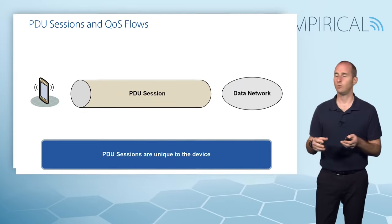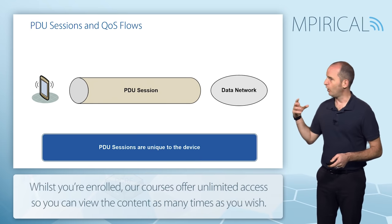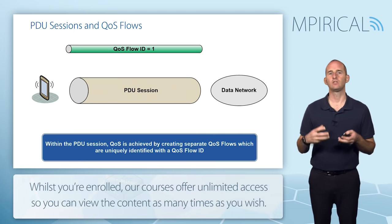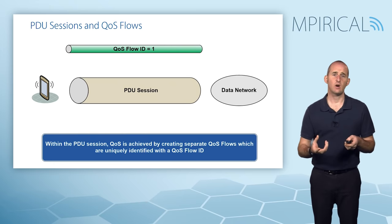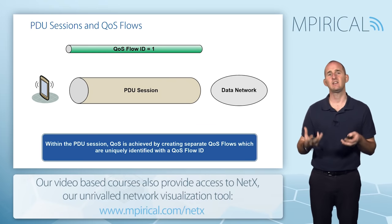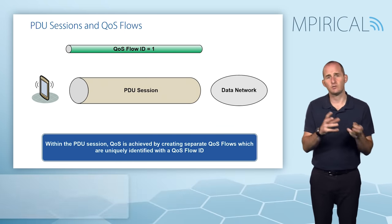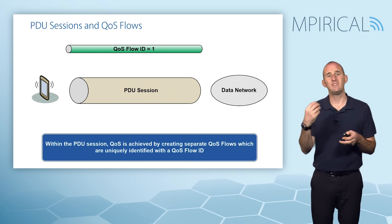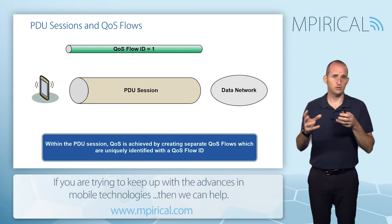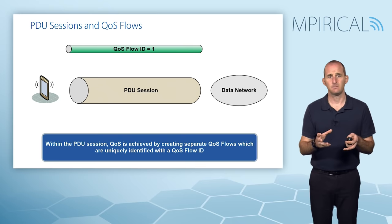No other devices in the network will be using the connectivity associated with this particular PDU session. In order to provide QoS within our PDU session, we have what are called QoS flows. A QoS flow is effectively a flow of user plane traffic which will be receiving a particular level of quality of service. Because we might have traffic with different QoS requirements, within the PDU session there can be several QoS flows in operation.